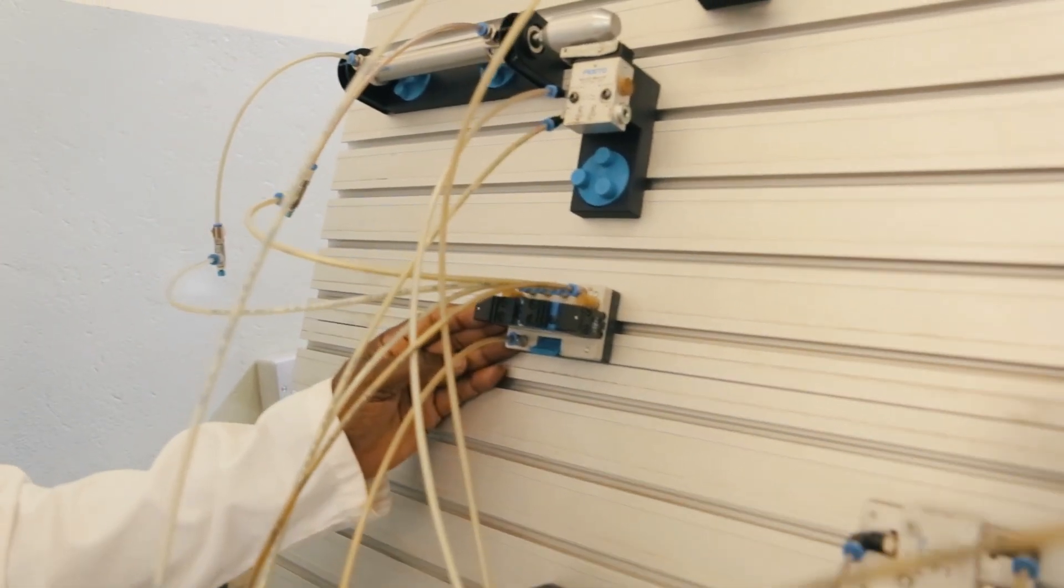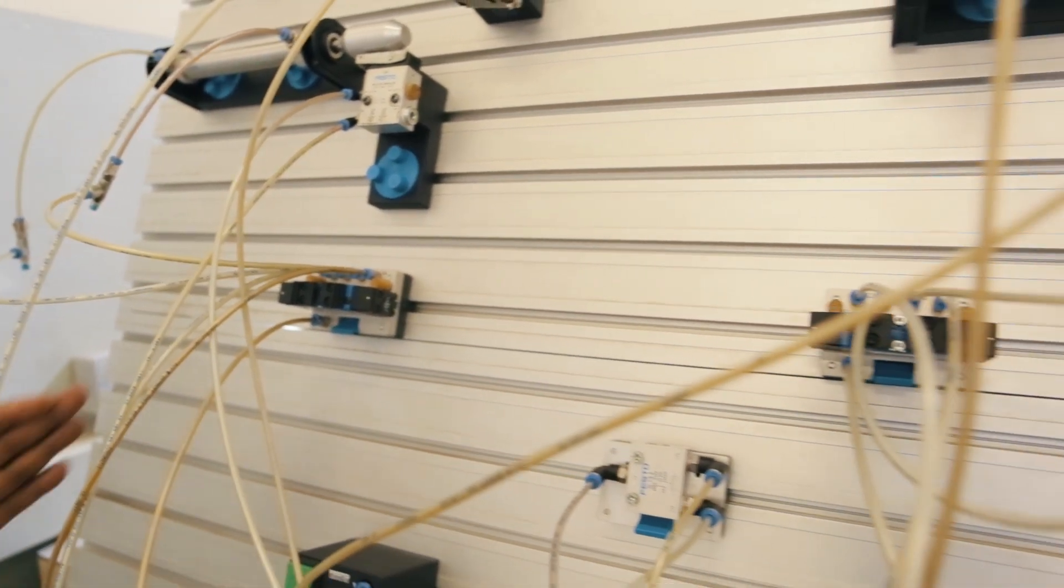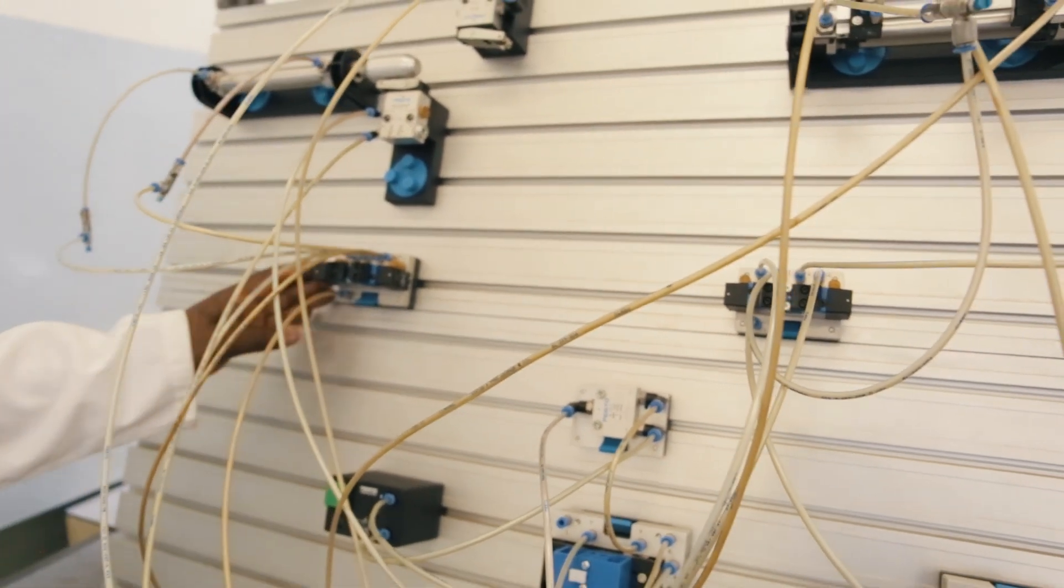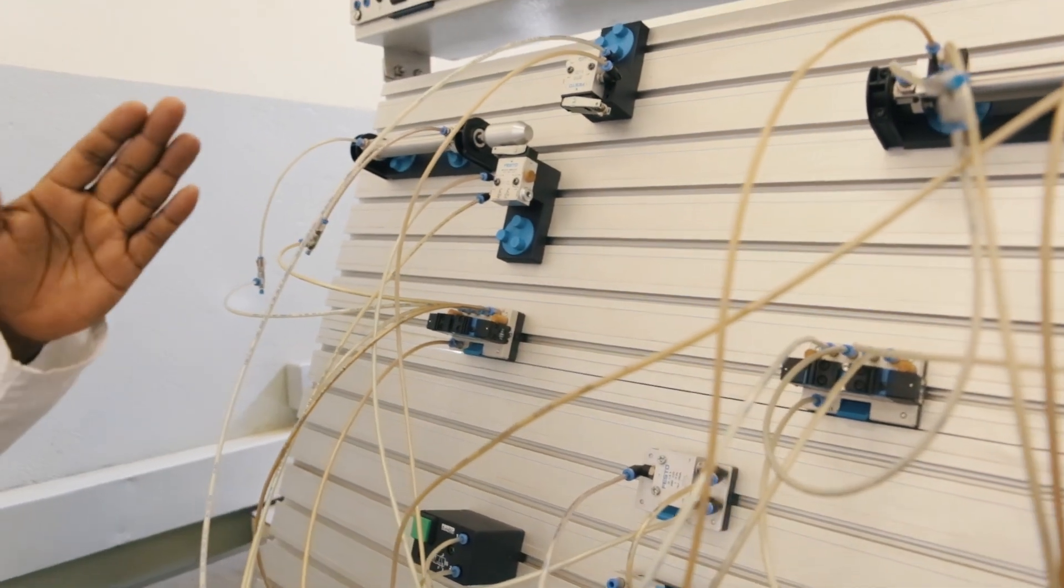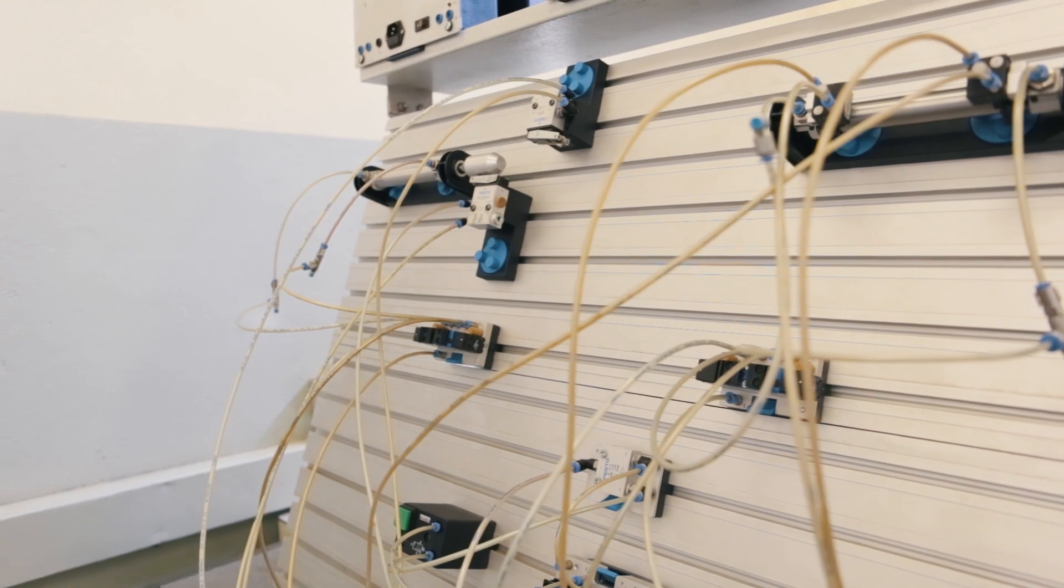I have two direction control valves. These are five by two direction control valves. The first one is controlling one cylinder, and the second one is controlling the other cylinder which is in the extended position.